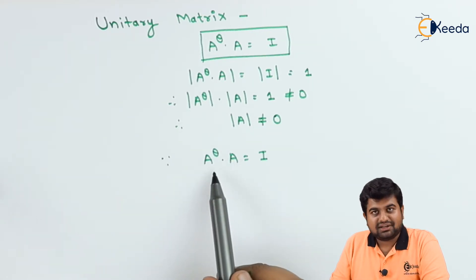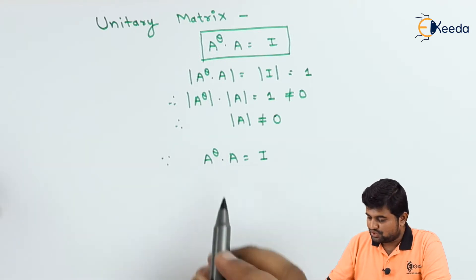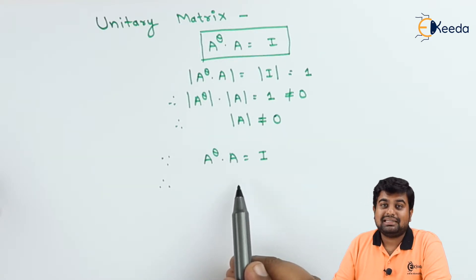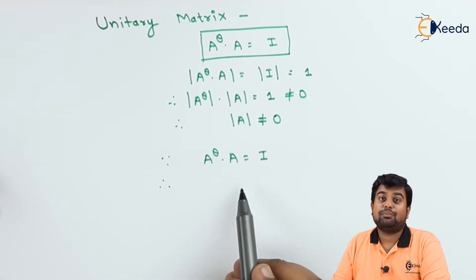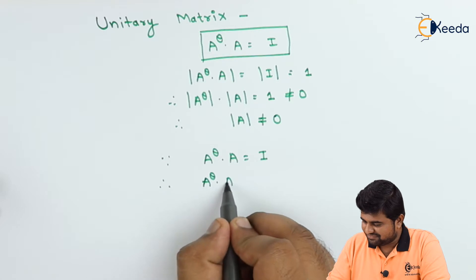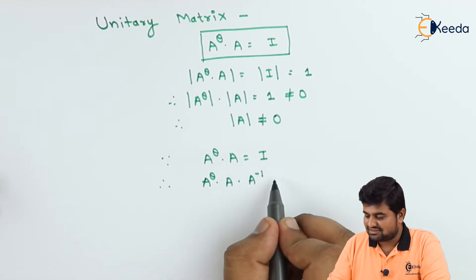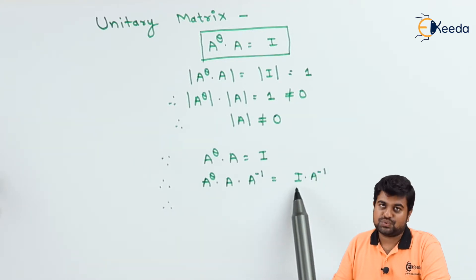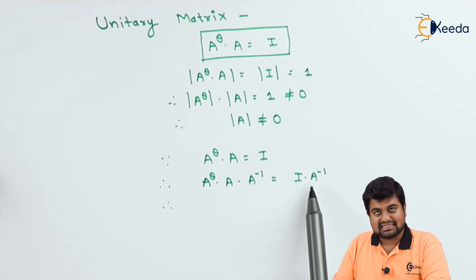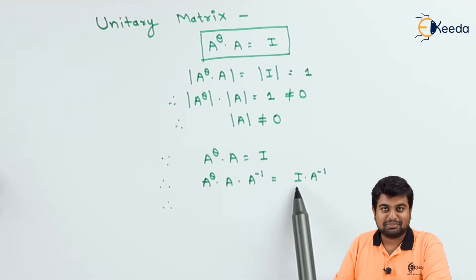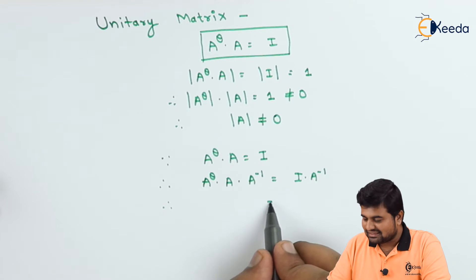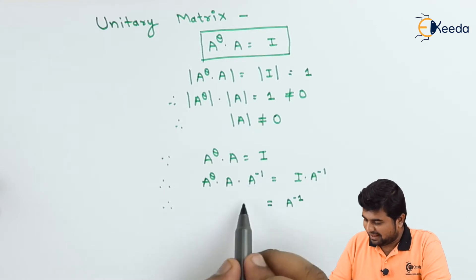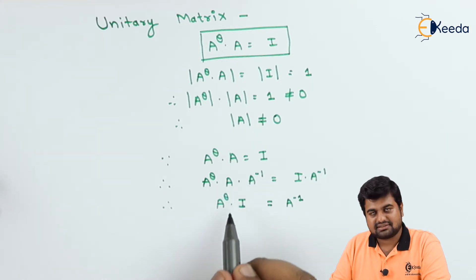As we know, in a unitary matrix, A-theta into A equals I. We will perform post-multiplication by A-inverse on both sides: A-theta into A into A-inverse equals I into A-inverse. Now, any matrix multiplied by the identity matrix gives the same matrix, so I into A-inverse equals A-inverse. And A into A-inverse is nothing but I.